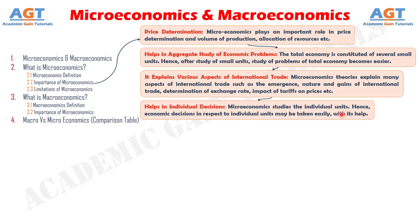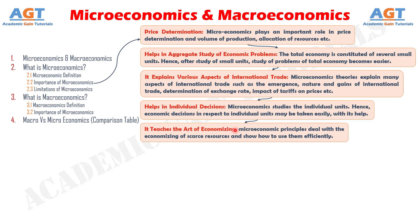A consumer may take a decision on what quantity a commodity is to be purchased at various prices. Similarly, a firm or an industry can take decisions regarding volume of production at various levels, taking production costs into consideration. Importance number five: It teaches the art of economizing. Microeconomic principles deal with the economizing of scarce resources and show how to use them efficiently. Microeconomic laws, like the law of substitution, show how a consumer can maximize his satisfaction by equating the ratios of marginal utilities to the prices of different goods. Likewise, there is optimum utilization of the factors of production when their marginal products become equal.